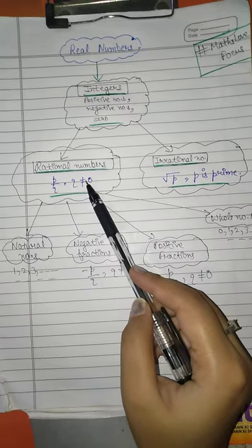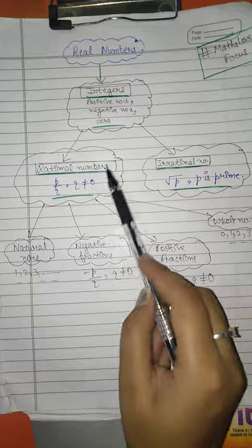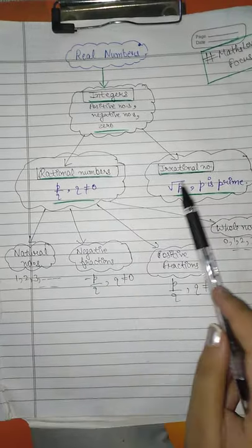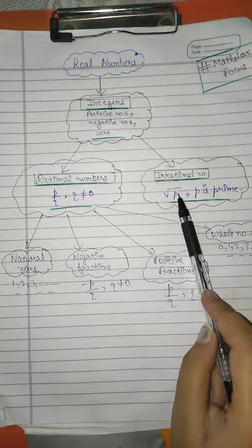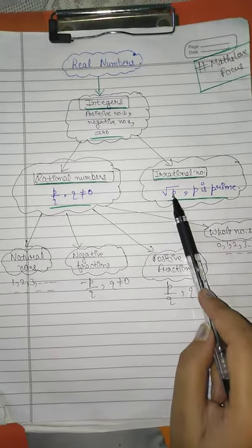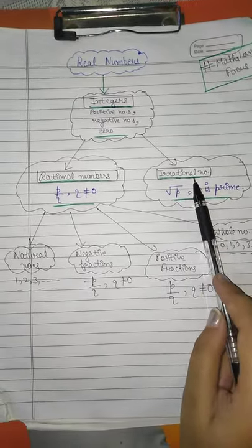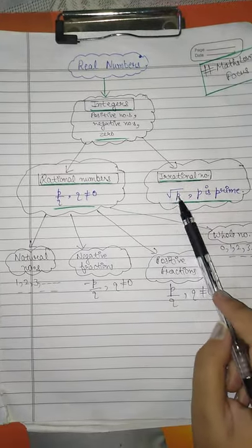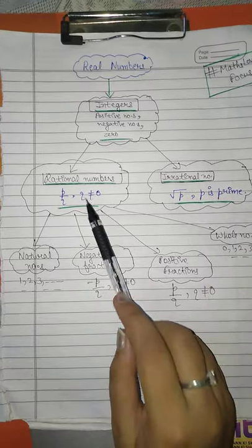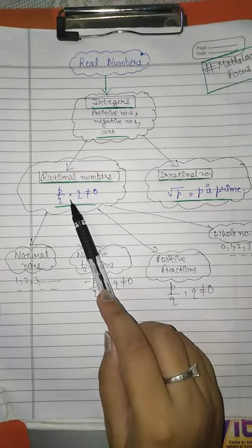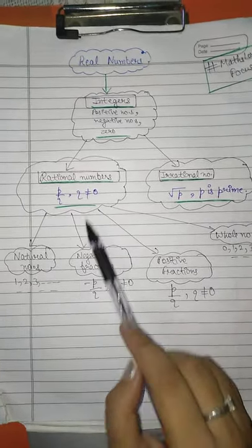When the denominator is not zero, it is a rational number. Where there is a prime number under root, those are irrational numbers, like square root of 2, square root of 5. Apart from irrational numbers, all are rational numbers.